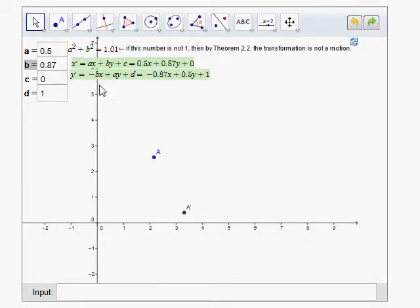What you'll see here are two points, A and A', and A' is just the image of A under the motion described by these two equations. X' equals AX plus BY plus C, and Y' equals minus BX plus AY plus D.